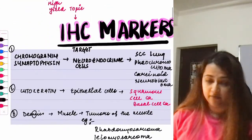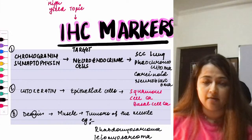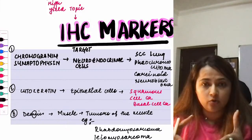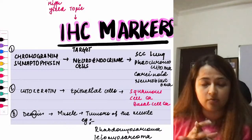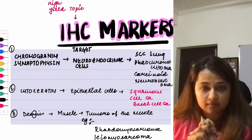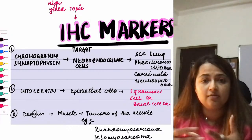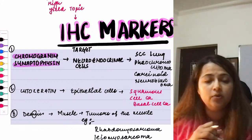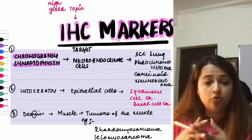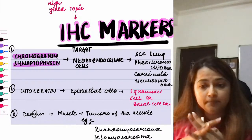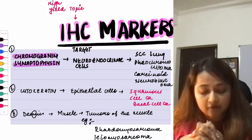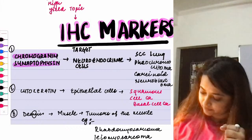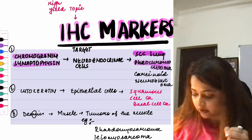Next, IHC markers — immunohistochemical markers — are very high yield for any exam. They tell you the origin of tumor cells. Number one: chromogranin, synaptophysin, and neuron-specific enolase (NSE) are markers for neuroendocrine tumors. Examples of neuroendocrine tumors include small cell carcinoma of the lung, pheochromocytoma, carcinoid tumor, and neuroblastoma.